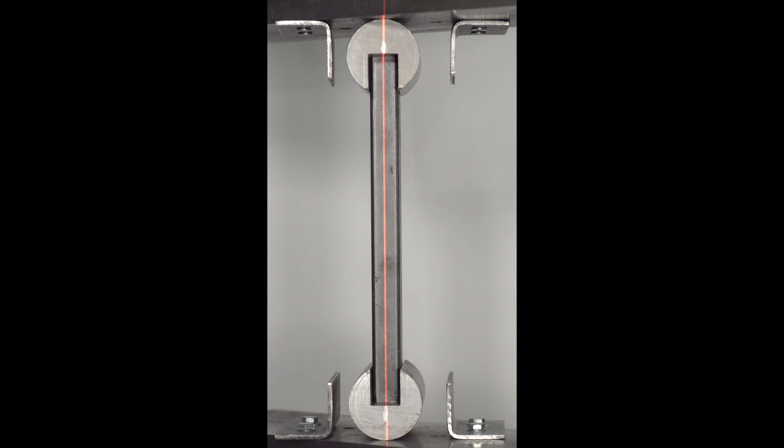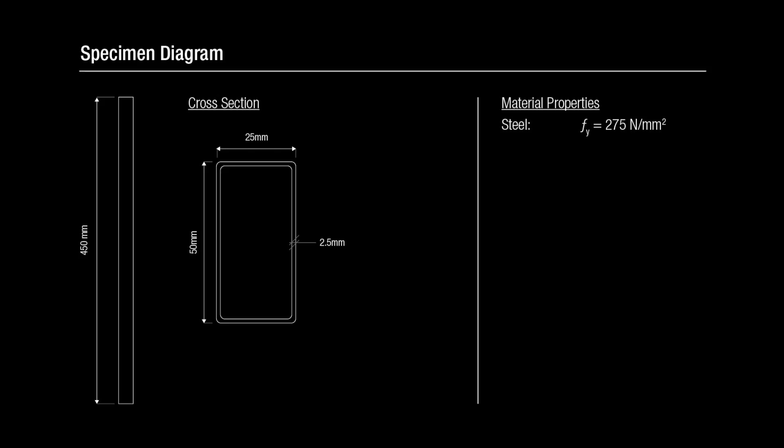This video shows a pin-ended column of low slenderness being tested in compression. This type of specimen is commonly referred to as a stocky column. The specimen is a rectangular hollow section made of structural steel. The length has been chosen such that the failure is dominated by the material strength.